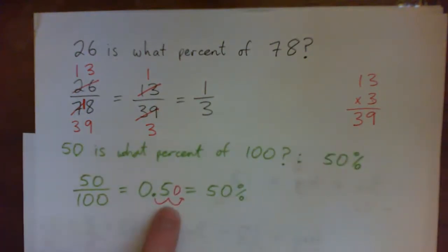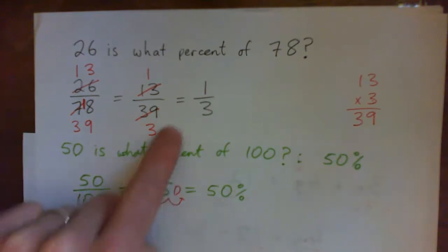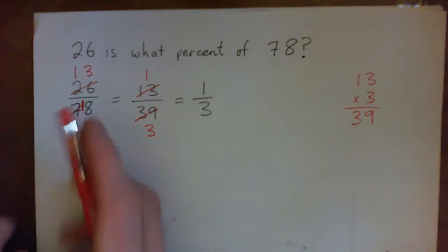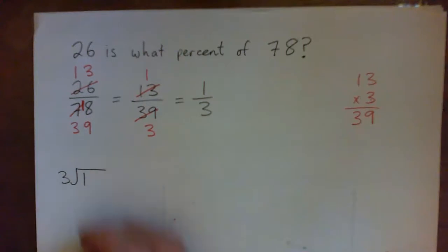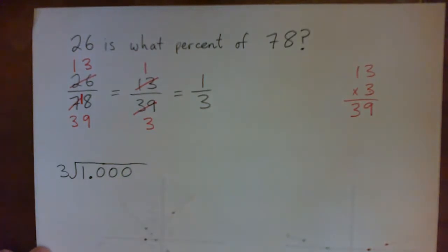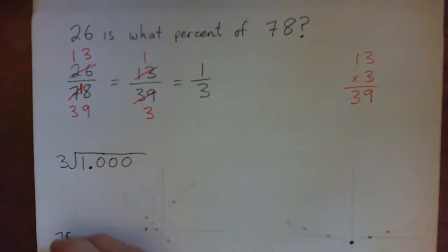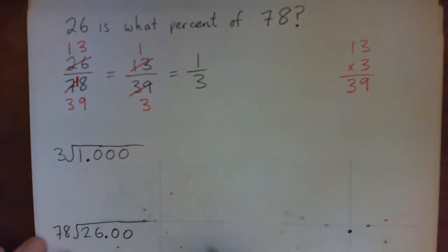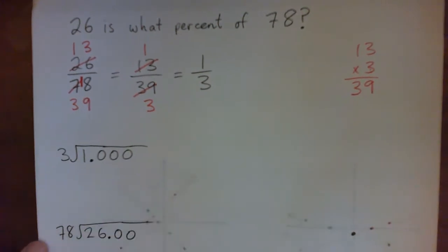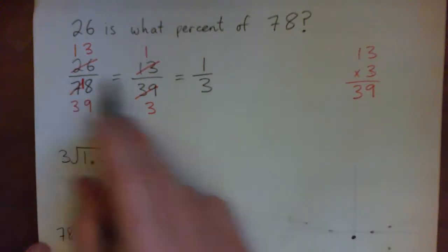We've simplified the fraction, but we still need to convert 1/3 into a decimal and then into a percentage. We could do the division 3 into 1 — or equivalently, 78 into 26. If you're using a calculator, you'd just go 26 divided by 78 and get the decimal. In this class we'll do it without a calculator, but both approaches give the same result. I simplified to 1/3 just to make it a bit easier.